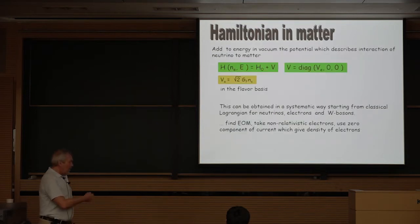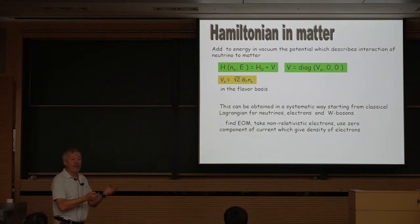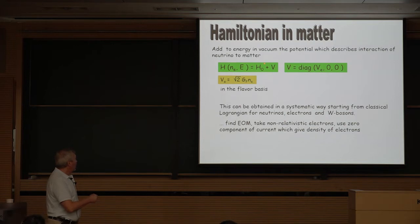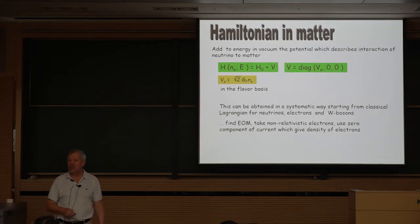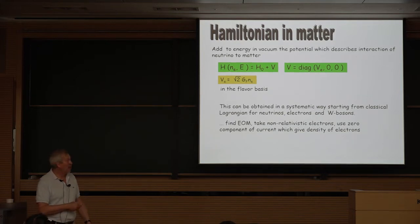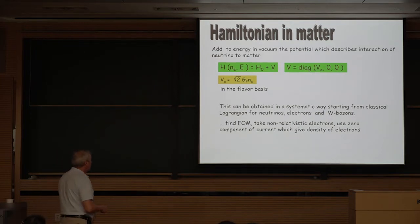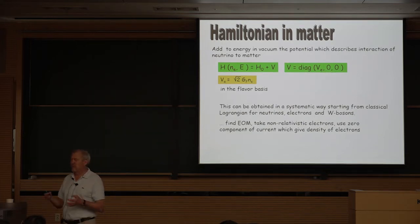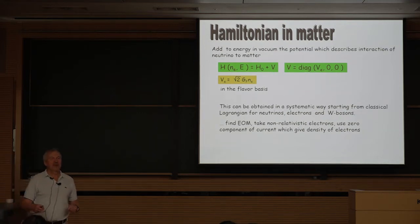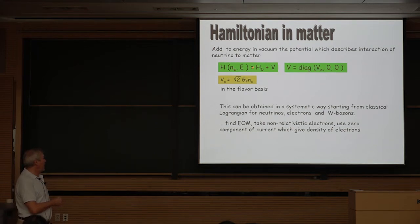The Hamiltonian of propagation of neutrinos in matter is obtained by adding the matter potential to the vacuum Hamiltonian — just an addition to the energy. For three neutrinos, the matter potential matrix V has only the electron-neutrino entry nonzero, because only electron neutrinos participate in charge-current scattering. This can be derived more systematically starting from the Lagrangian for neutrinos, electrons, and W bosons, going to the limit of electrons at rest. Physically it is clear: you add to the vacuum energy the interaction energy given by the matter potential.